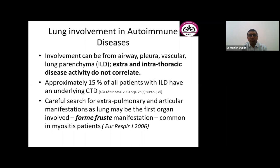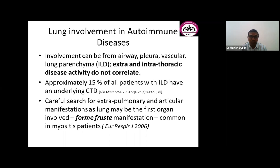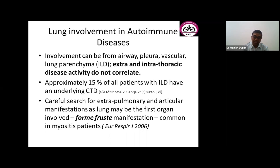Respiratory involvement can be anywhere — the airway in vasculitis, pleura in rheumatoid or lupus, or vascular, leading to PAH or ILD. Importantly, the extrathoracic and intrathoracic disease activity may not correlate in autoimmune diseases. A patient may present with ILD and no joint symptoms, or may have extensive joint symptoms and rashes with no lung involvement. Approximately 15% of all ILD patients may have an underlying connective tissue disorder, and lung ILD can be the first presentation, especially in myositis patients.